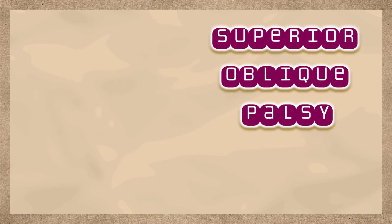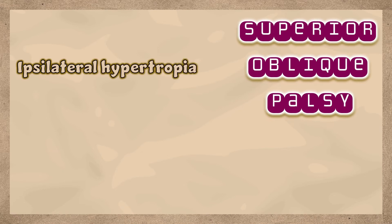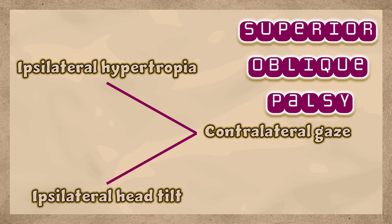So in a superior oblique palsy, there is ipsilateral hypertropia which is greater in contralateral gaze and greater on ipsilateral head tilt.